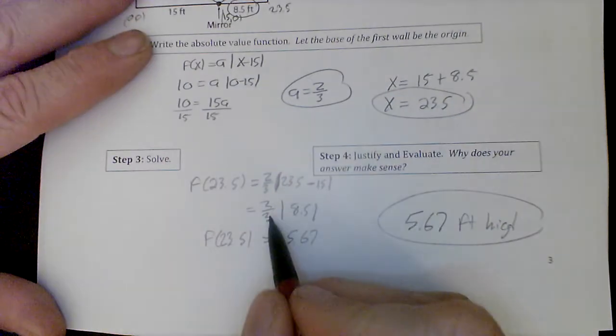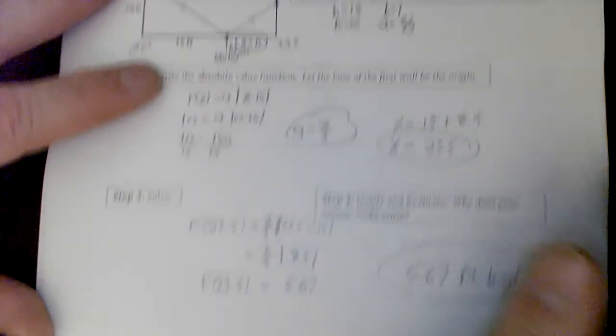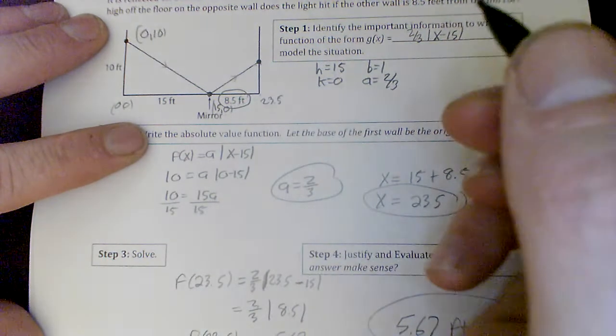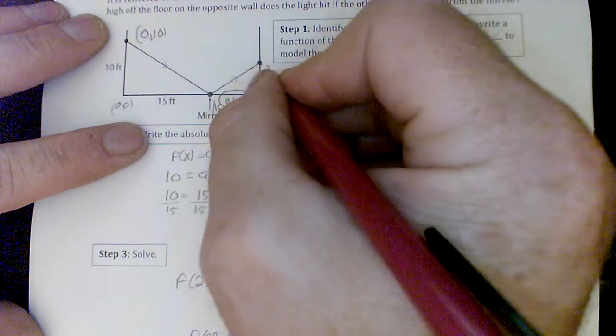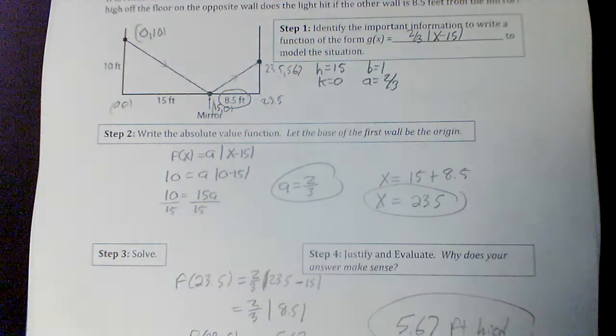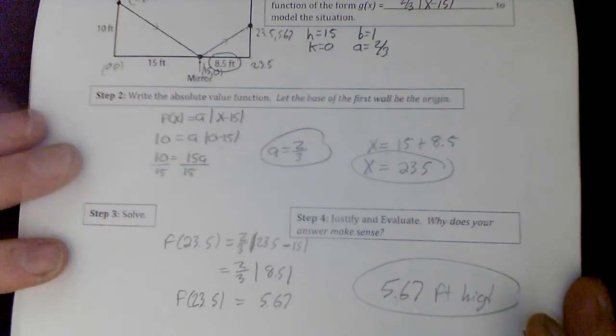And then if I multiply 2/3 by 8.5, I get my output of 5.67, which is going to be this point right here. It is going to be 23.5 and 5.67. And that tells us exactly how high off the ground it is. And that would be your answer.